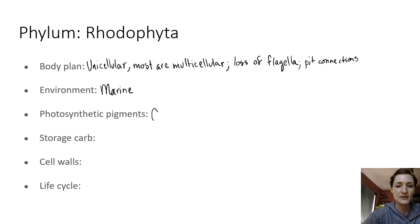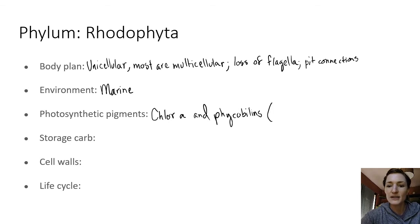They have chlorophyll A, just like cyanobacteria, and phycobilins, just like cyanobacteria. And the phycobillin that they have the most of is phycoerythrin. We learned that cyanobacteria are the blue-green algae because they have more phycocyanin, whereas red algae are more red because they have this phycoerythrin.